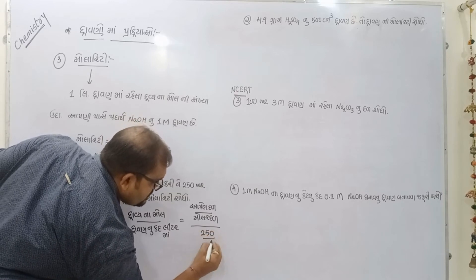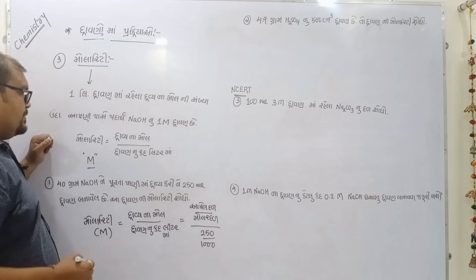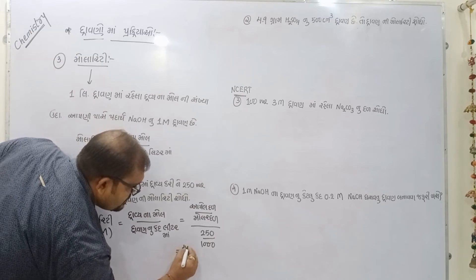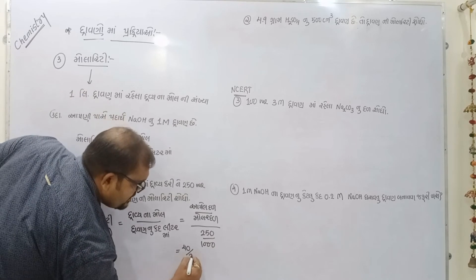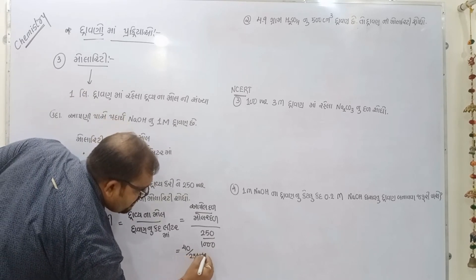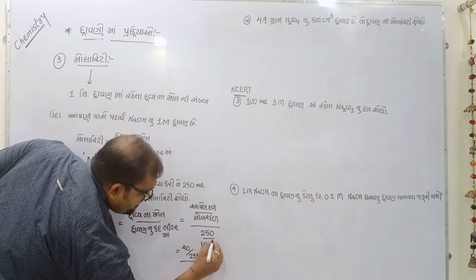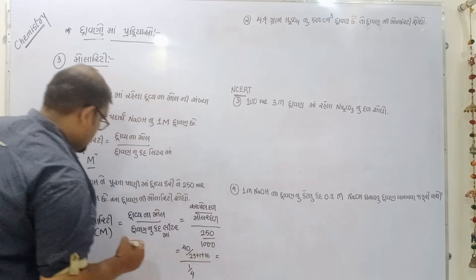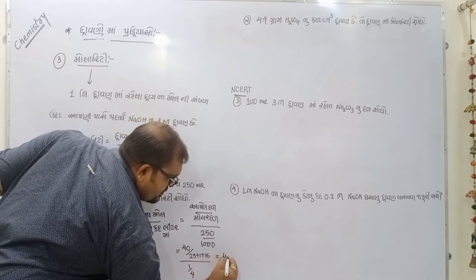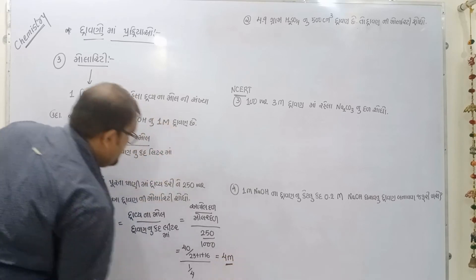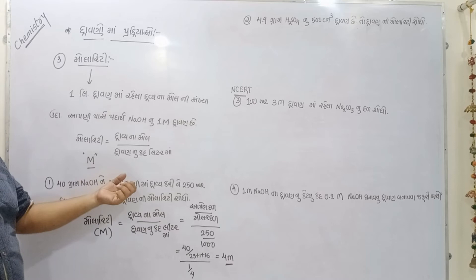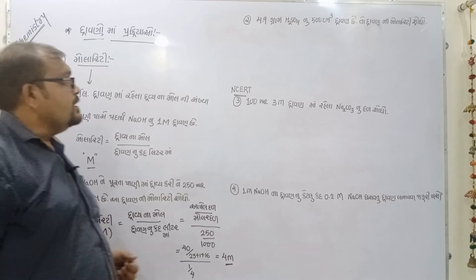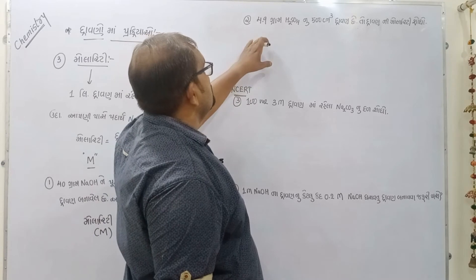V = 250 ml = 0.25 L. M = 1 ÷ 0.25 = 4 M. NaOH ન ા 40 ગ ્ ર ા મ ન ુ ં 250 ml દ ્ ર ા વ ણ — મ ો લ ા ર ી ટ ી 4 M.